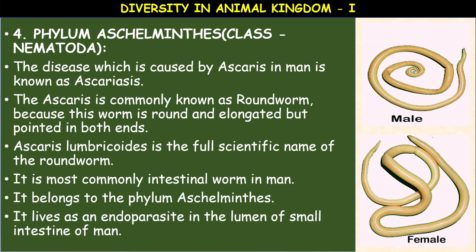Aschelminthes are also called roundworms. They are bilaterally symmetrical, triploblastic, and pseudocoelomate animals. They may have free-living, aquatic, terrestrial, or parasitic adaptations. They are dioecious — meaning separate male and female organisms are present. From nematoda onwards there is sexual dimorphism; the female is somewhat larger in size compared to the male. Fertilization is internal with sexual reproduction. Excretion occurs through an excretory pore. Examples: Ascaris (roundworm), Wuchereria (filarial worm), and Ancylostoma duodenale (hookworm). They cause diseases such as elephantiasis and ascariasis.